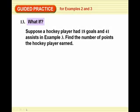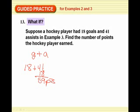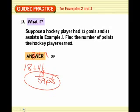Number 13. What if suppose a hockey player had 18 goals and 41 assists in example 3. Find the number of points the hockey player earned. Well if you remember it was number of goals plus the number of assists. So 18 plus 41. And underneath it that would be 9. That player would have 59 points. And I think we'll have the answer here. Yep, 59. So that's it for 1.2. You can go on with your assignment. And we'll see you next time.